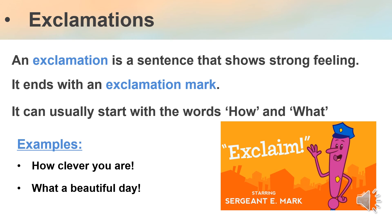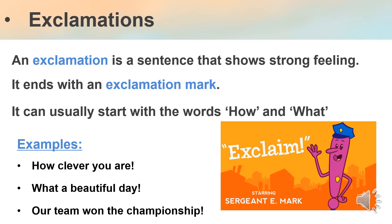"What a beautiful day!" — this is an exclamation sentence. It shows strong feelings or emotion about the day, and it ends with an exclamation mark. "Our team won the championship!" — here I am showing my excitement and happiness by using the exclamation mark. I'm showing my emotions and feelings by adding the exclamation mark.